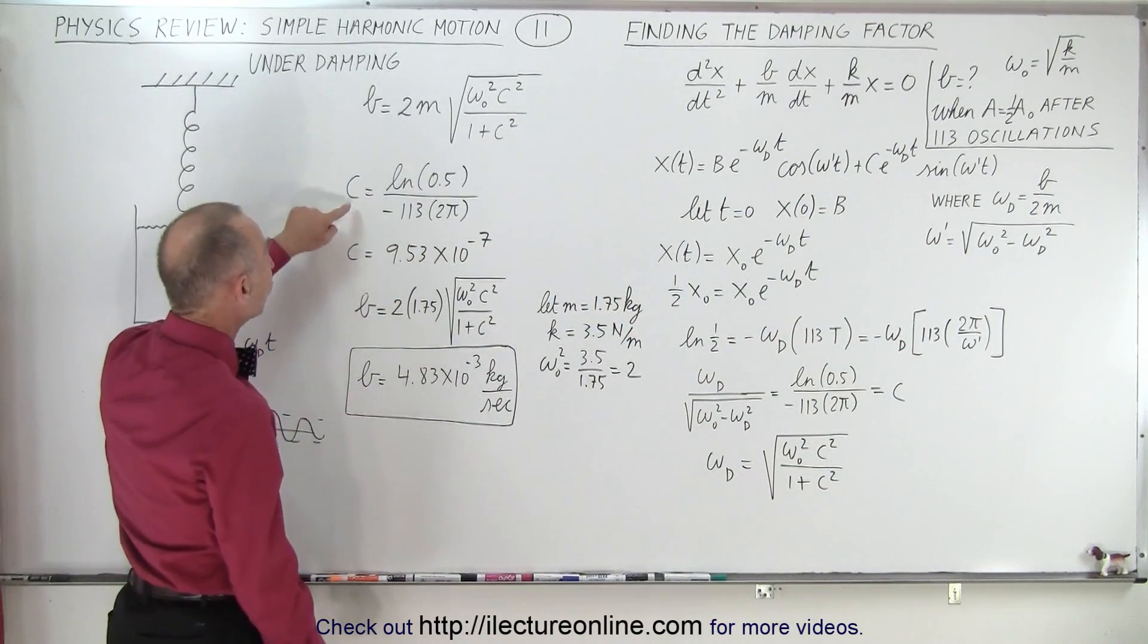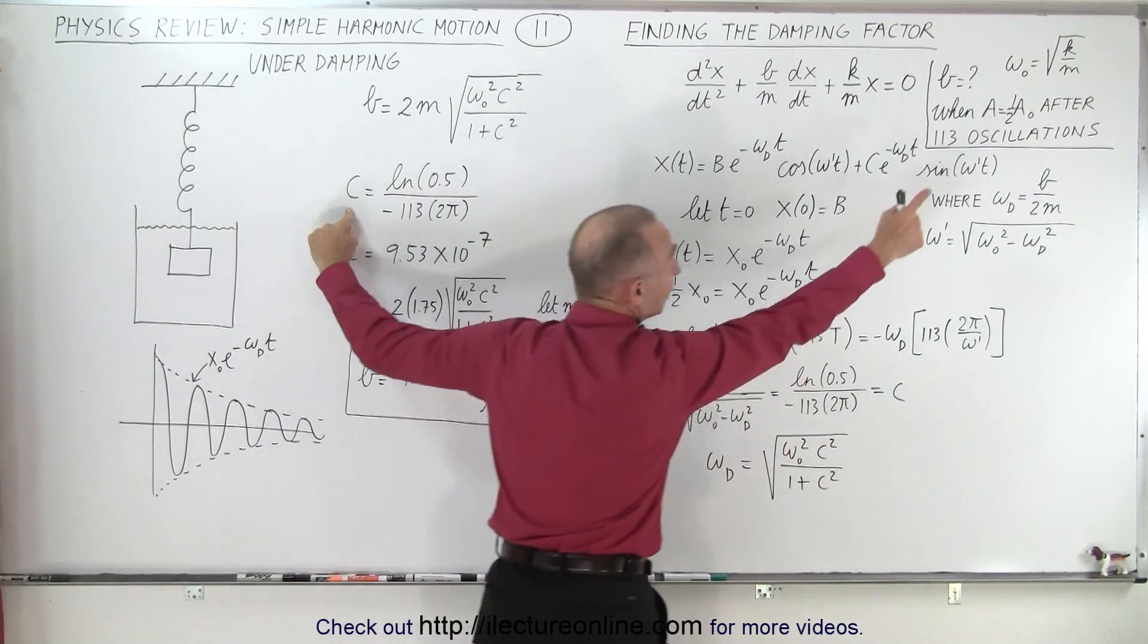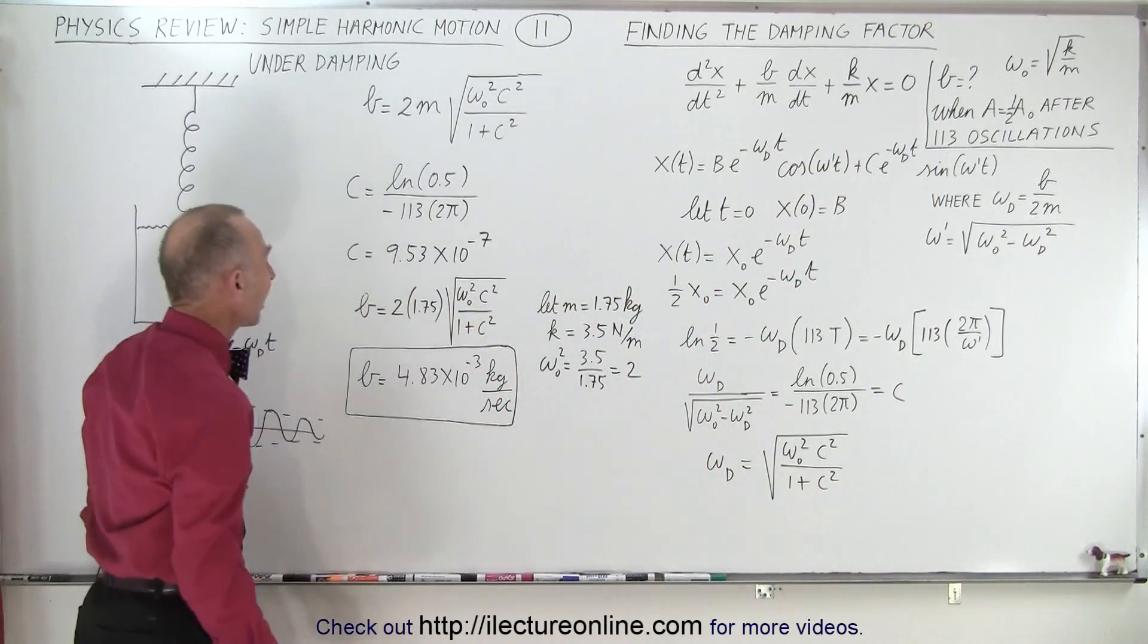Notice that we can then solve for c numerically. So now we can solve this numerically for c, plugging in omega sub naught, the square root of k over m. And now once we have that,